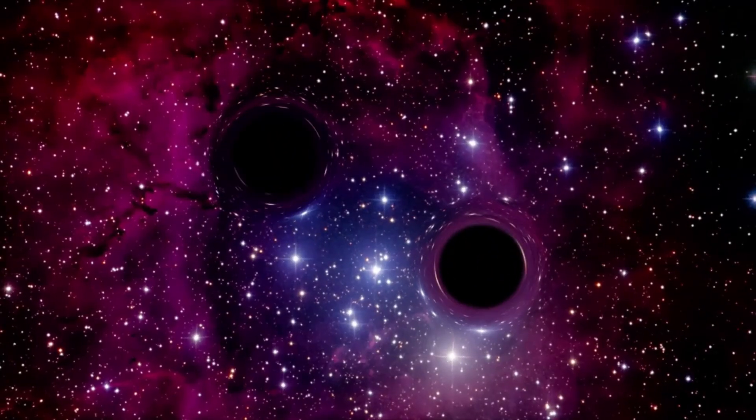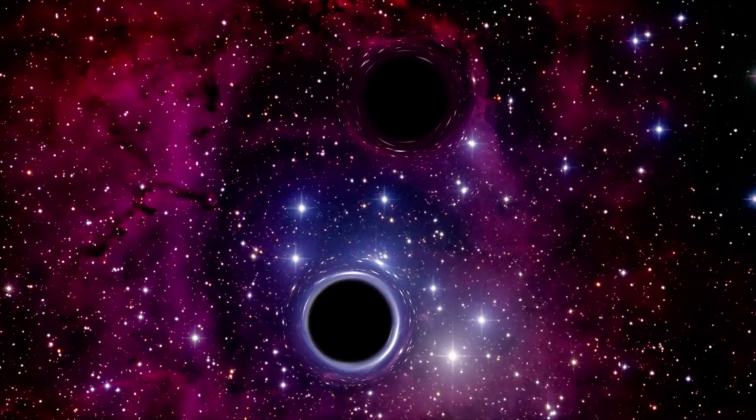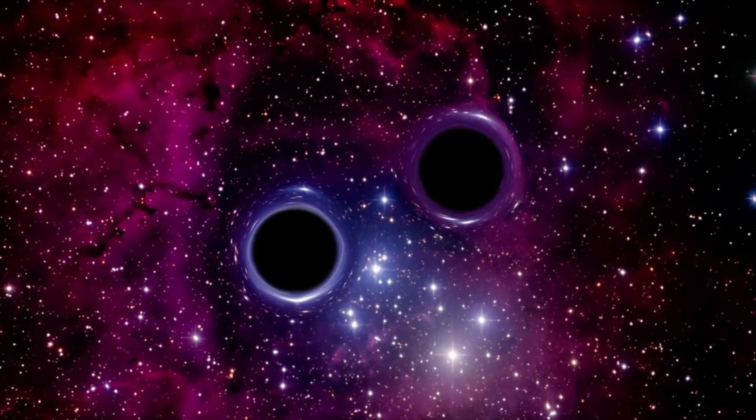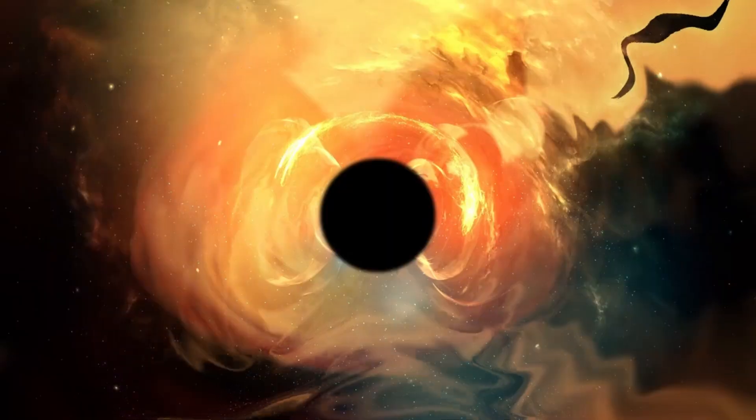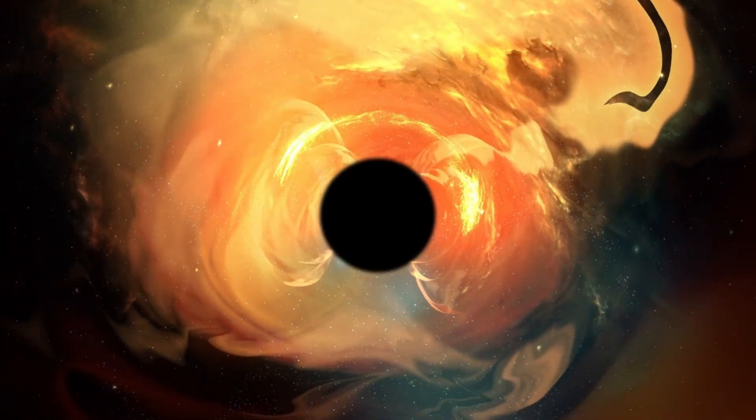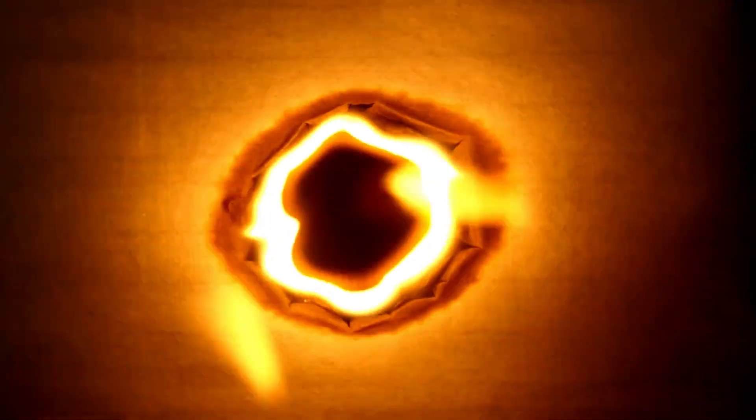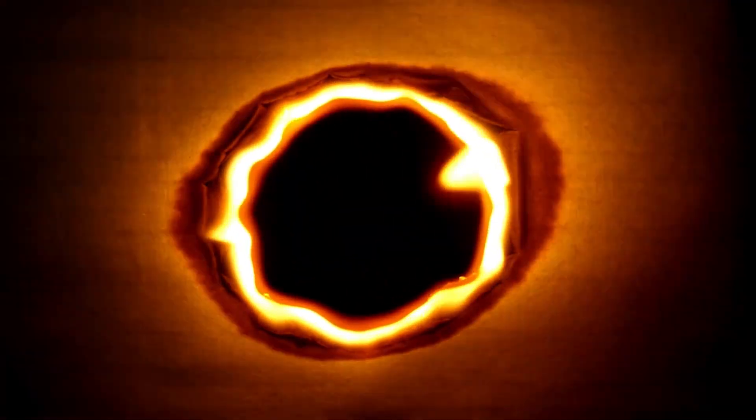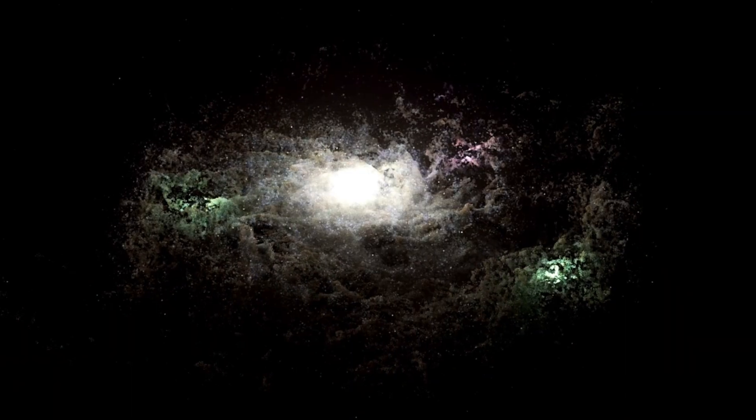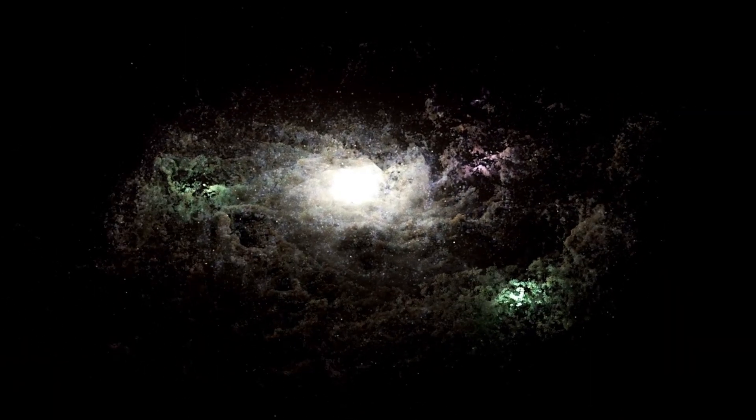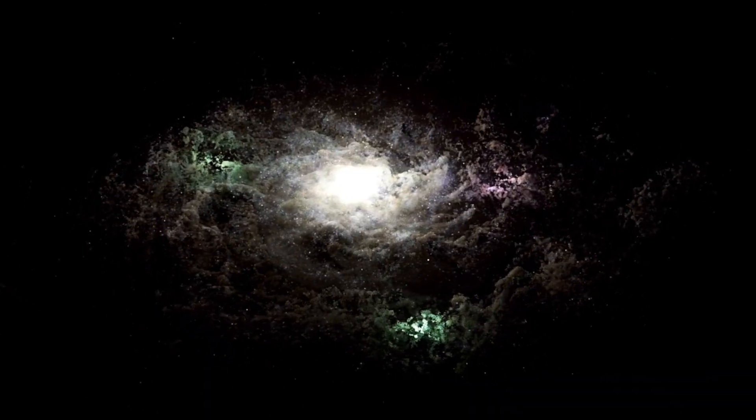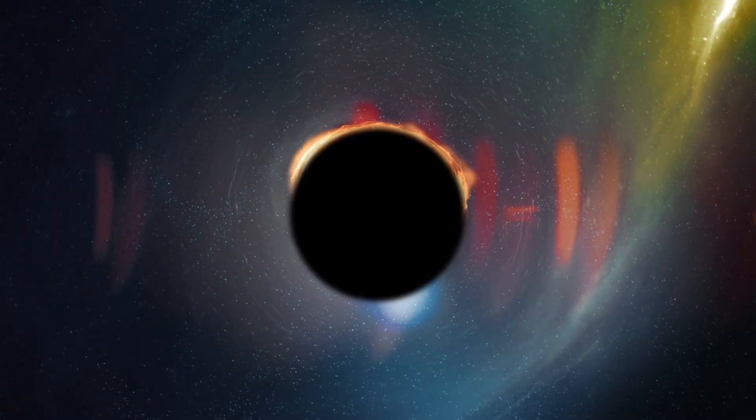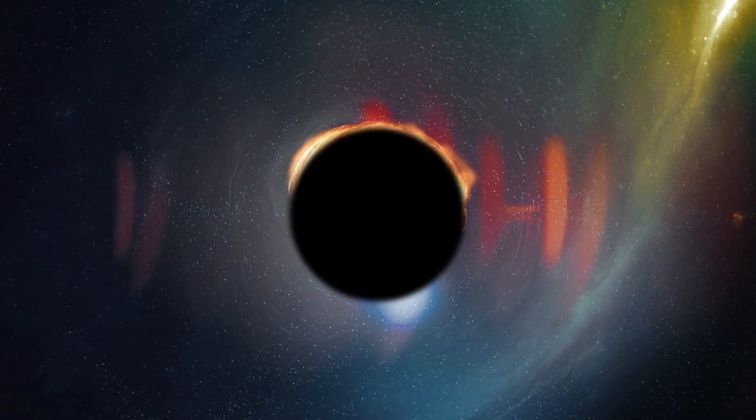Black holes themselves are invisible, cloaked behind their event horizons, points of no return from which not even light can escape. But when they feed on gas and dust from their surroundings, that material forms a blazing hot accretion disk that shines incredibly brightly, often outshining entire galaxies. This blazing core is called an active galactic nucleus, or AGN. The AGN in GNZ-11 is emitting an astonishing amount of light, indicating that the black hole is devouring matter at an extraordinary rate.